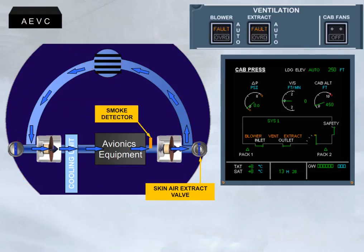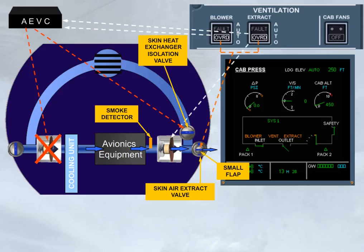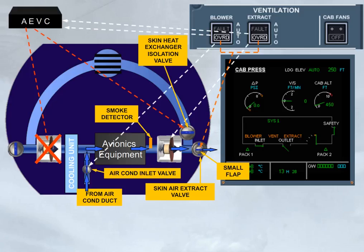In case of smoke detection, both fault lights come on. Setting both push-button switches to override allows the ventilation system to be reconfigured by isolating the skin heat exchanger through the closure of the skin exchanger isolation valve, by stopping the blower fan, by opening the small flap of the skin air extract valve, by transferring the control of the extract fan to the push-button switch, and by adding air from the air conditioning duct through an air conditioning inlet valve.